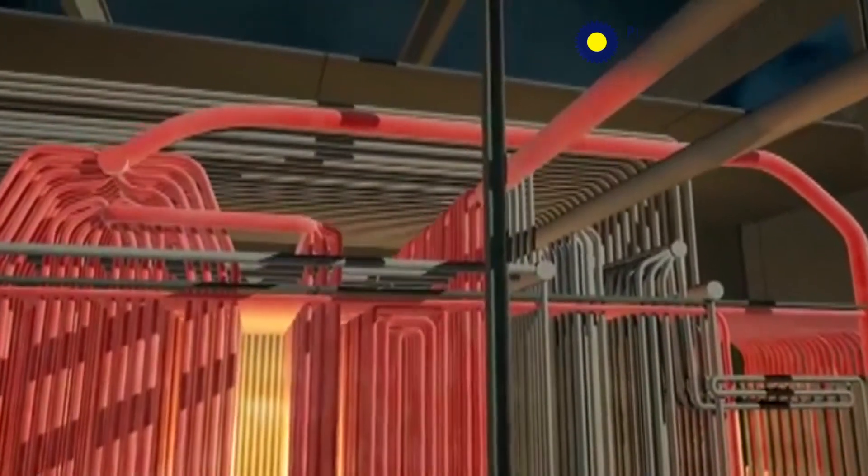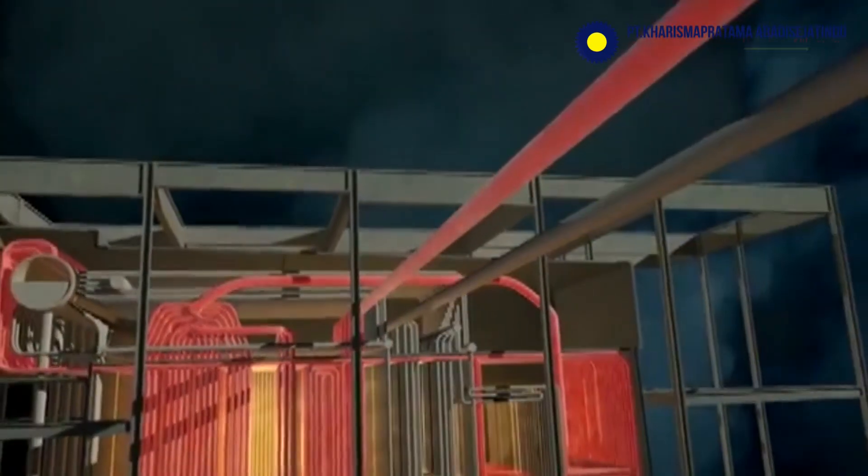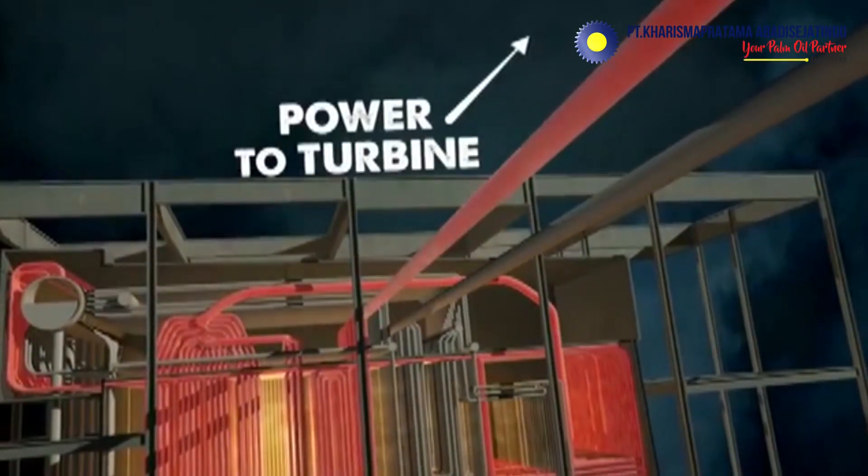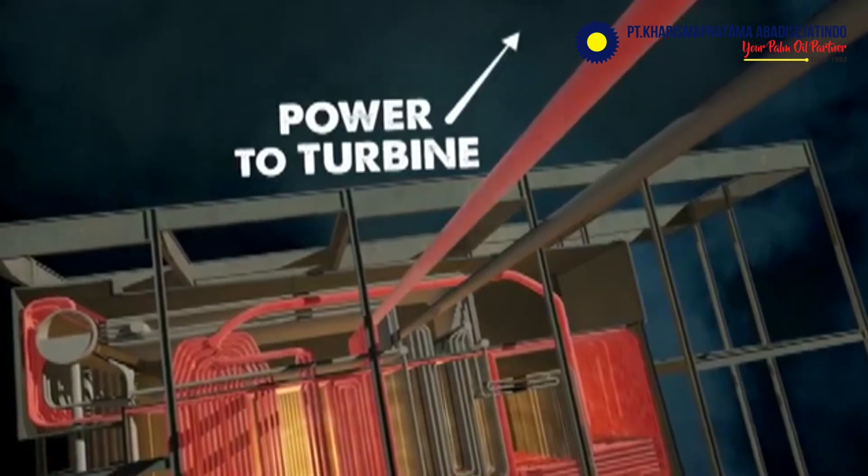This dry, superheated steam then exits the boiler, passing through a steam header and ultimately providing power to the spinning turbine, which generates electricity.